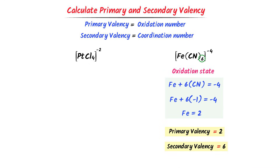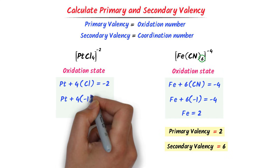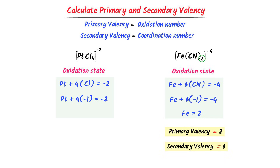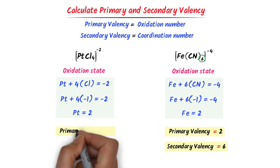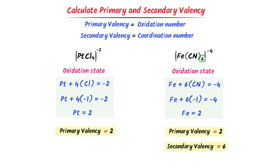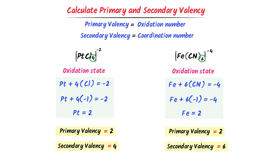Now consider this coordination compound [PtCl₄]²⁻. Find its primary valency and secondary valency. I find the oxidation number of platinum: Pt + 4×Cl = −2. Each Cl⁻ is −1, so Pt + 4×(−1) = −2, giving platinum = +2. Thus the primary valency of platinum is +2. There are four chlorine ligands bonded to platinum, so the coordination number is 4 and the secondary valency is 4. Using this simple method, we can easily find the primary and secondary valency of any central metal atom.